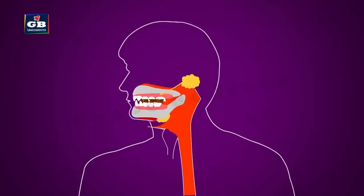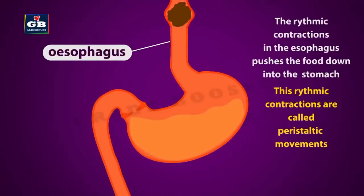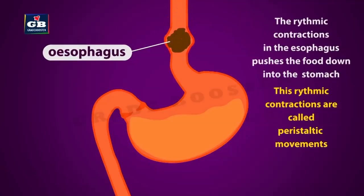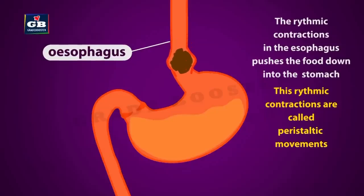The food is well chewed in the mouth and passes down into the stomach through the esophagus. The rhythmic contractions of the esophagus help the downward movement of the food. These rhythmic contractions are called peristaltic movements.